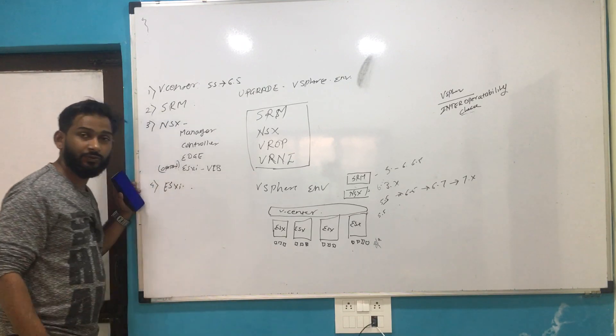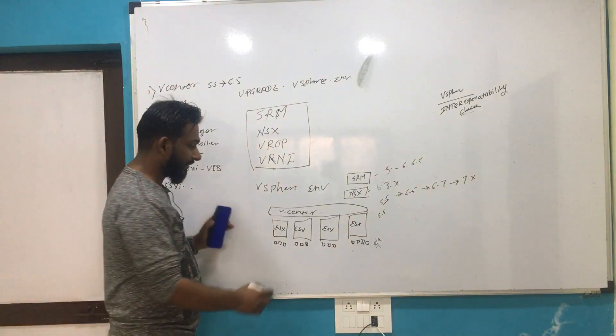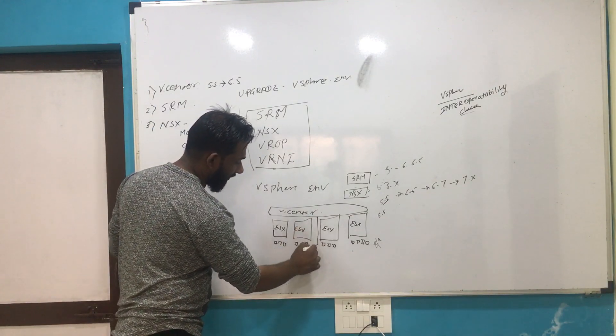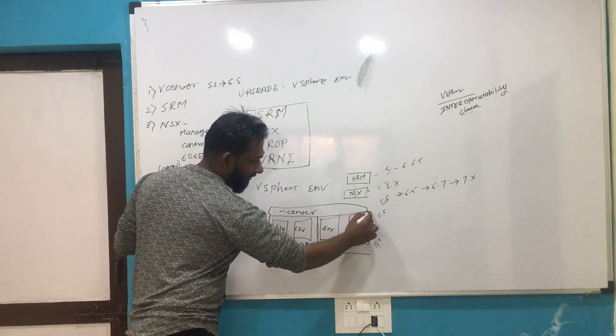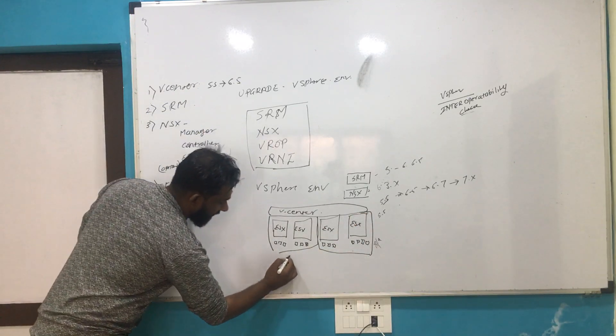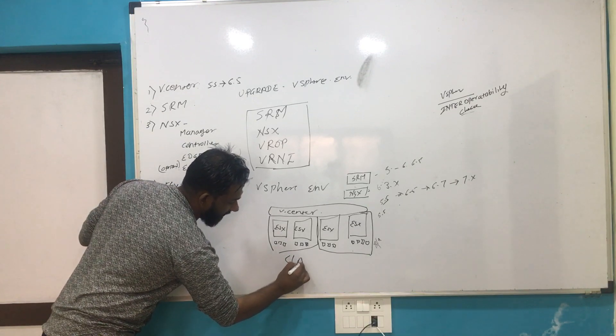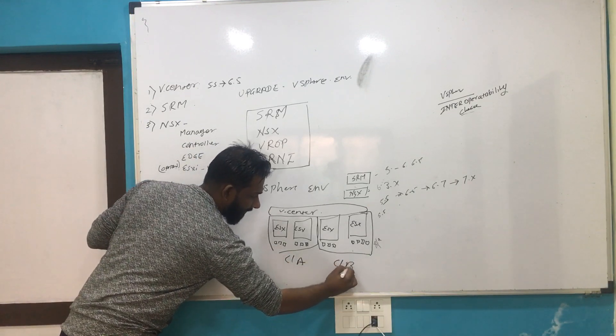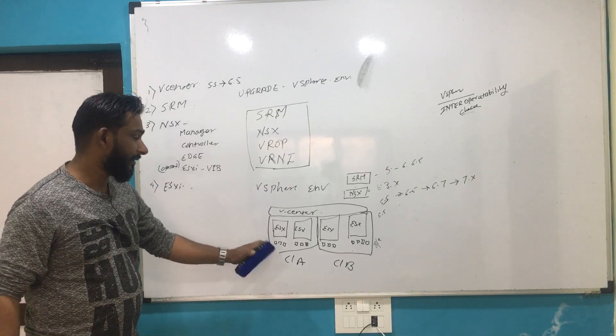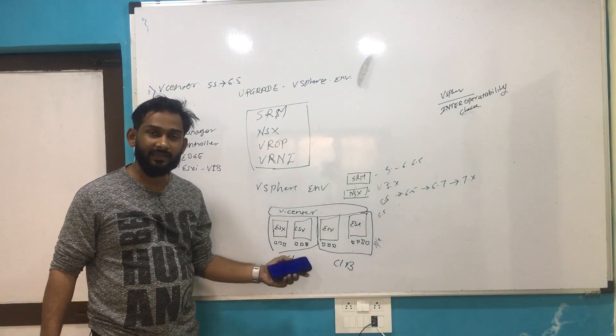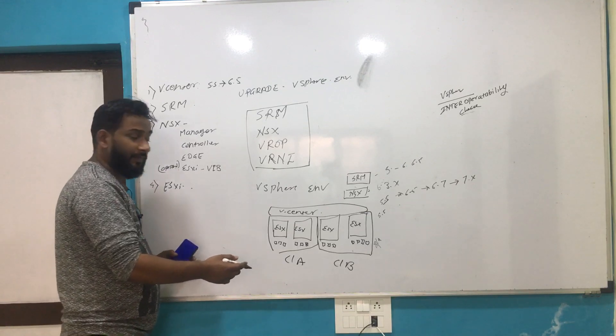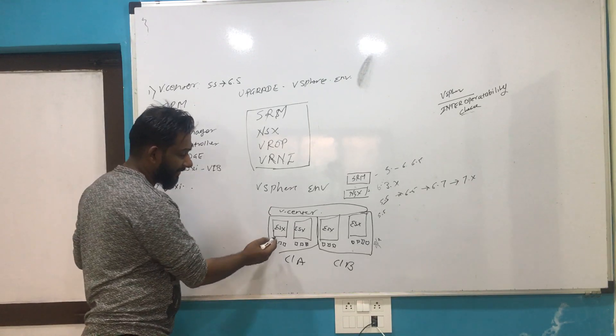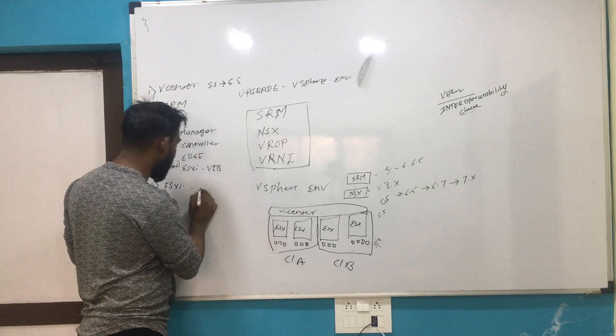We will upgrade the ESXi host. When we do the upgrade of ESXi host, just assume we have these two clusters. It's a simplified diagram. This is Cluster A and this is Cluster B, and they are configured with DRS and HA. Whenever we perform any kind of upgrade activity on ESXi host, we put it under maintenance mode.